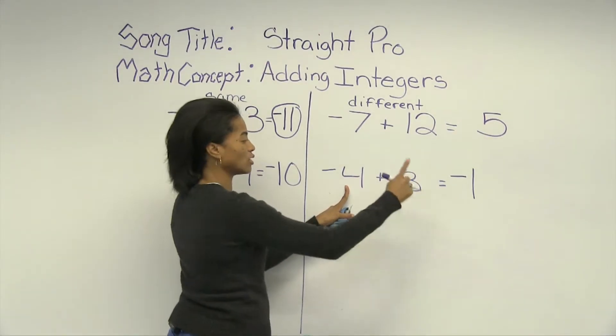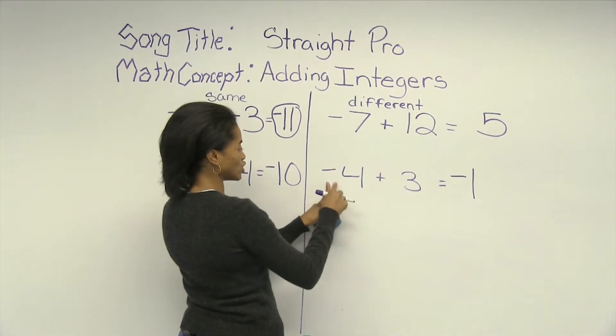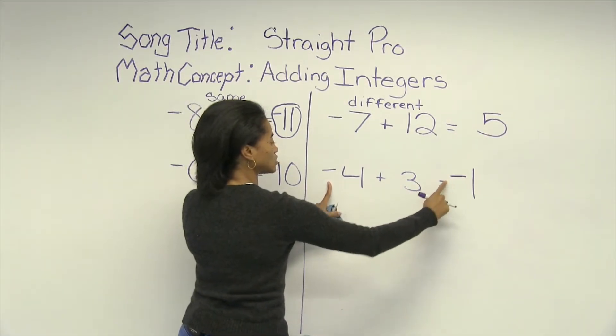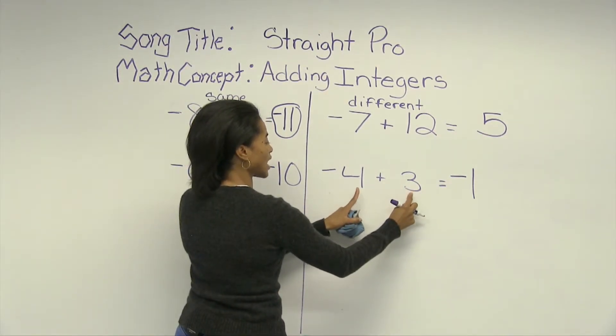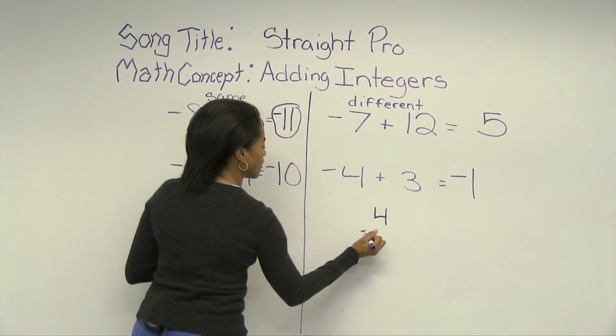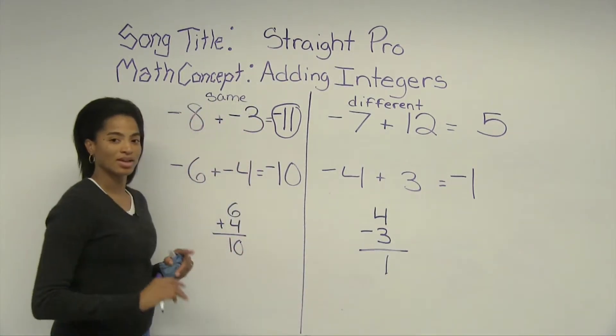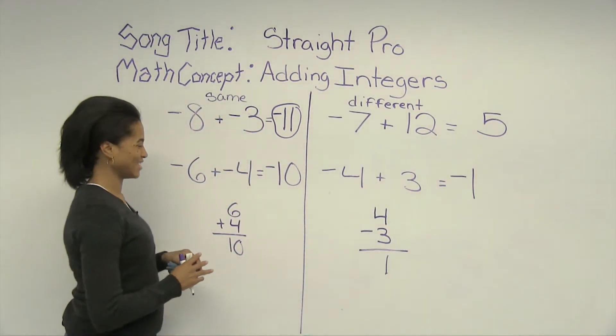Over here, the signs are different. We take the sign of the one with the largest absolute value, which would be negative 4. So the answer is negative, and we subtract the absolute values of 4 and 3. So 4 minus 3 will give us 1, and our answer would be negative 1. Got it?